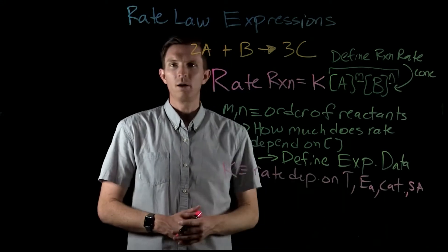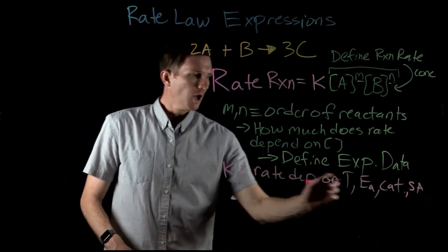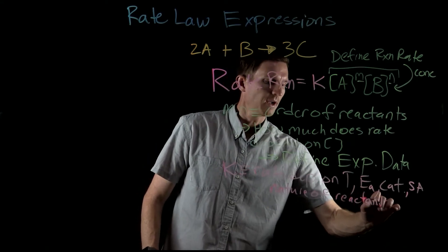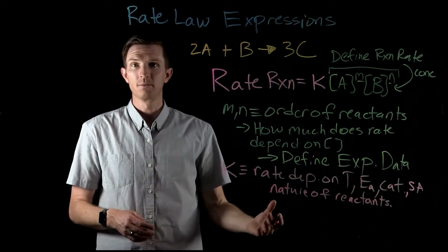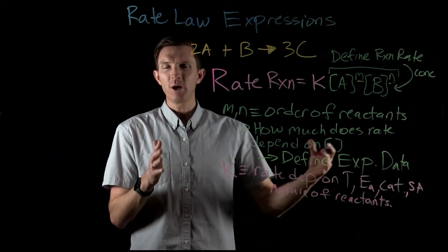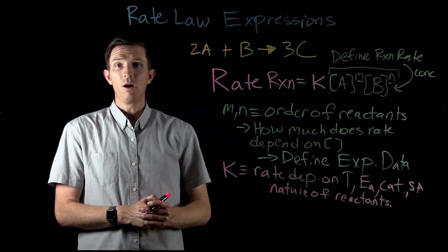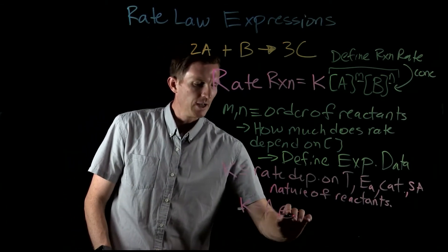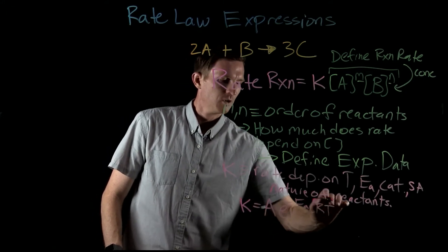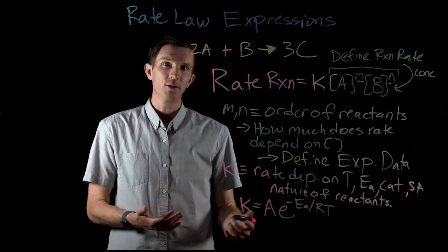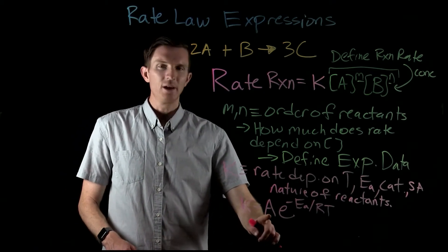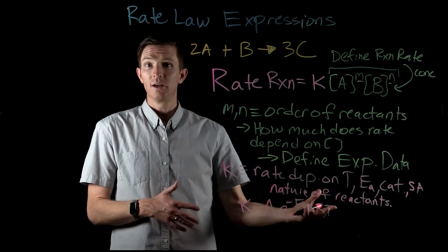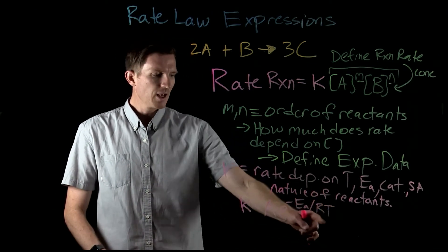Temperature is going to change our K value. The rate constant is also dependent on the nature and chemical properties of our reactants — how much do they want to combine, react, and form products. We can express this mathematically: our rate constant equals A times e to the negative activation energy over RT. This is called the Arrhenius equation, relating our rate constant, the frequency factor A, activation energy, the ideal gas constant R (8.314), and temperature.